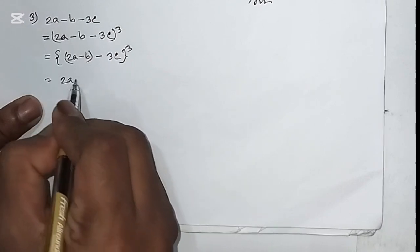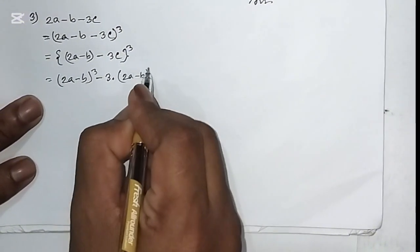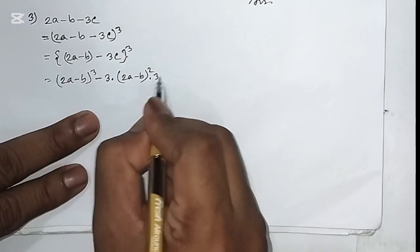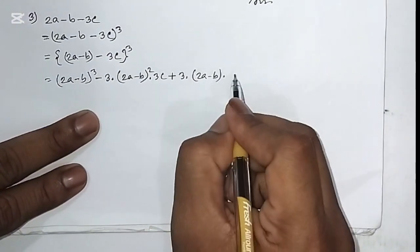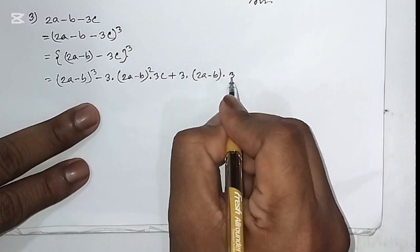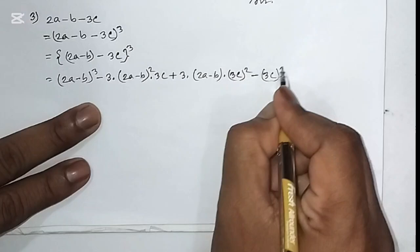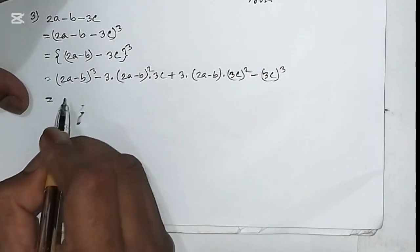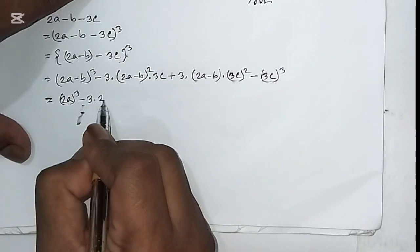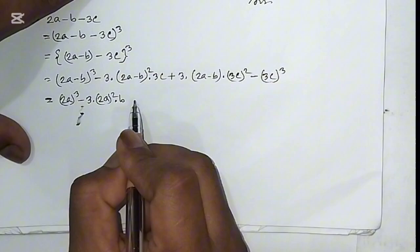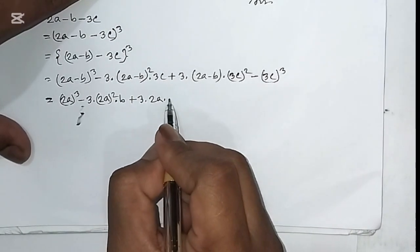A cube means (2a - b)³, minus 3 into a squared, which is (2a - b)², into b, which is 3c, plus 3 into a, which is (2a - b), into b squared, which is (3c)². Now again we apply (a - b)³ for (2a - b)³: a means 2a, so (2a)³ minus 3 into (2a)² into b plus 3 into 2a into b squared minus b cube.